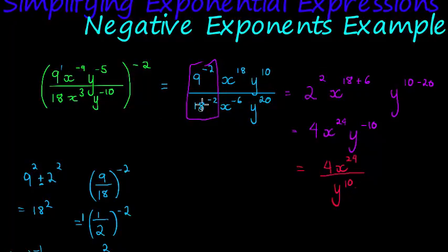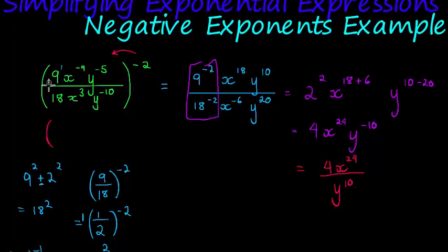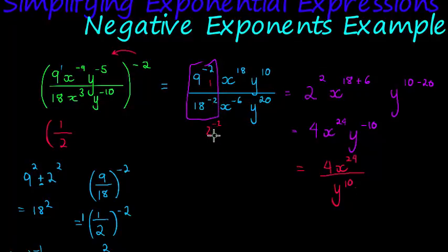If you had trouble with the first part, it might have been easier to simplify the coefficients before distributing the negative 2. First simplify: 9 divided by 18 reduces to 1 over 2. Then instead of having 9 to the power of negative 2, you would only have 1 over 2 to the power of negative 2, and that 2 would simply swap from the denominator to the numerator.